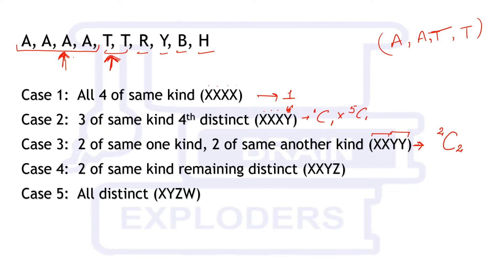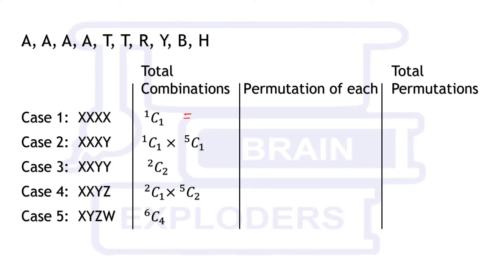Case 4: two of the same kind and two distinct. Two same type means either A or T, so 2C1 = 2 ways, and then 5C2 = 10 for the distinct pair, giving 2 × 10 = 20 combinations. Case 5: all four distinct. From six distinct element types (A, T, R, Y, B, H) select four, giving 6C4 = 15 combinations. So the combination counts are: 1, 5, 1, 20, and 15.